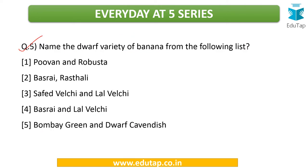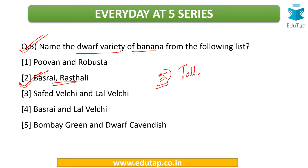The last question for discussion: name the dwarf variety of banana from the following list — which options contain both dwarf varieties. The answer is Basrai and Rastali; these are the correct answers. Now the next question, the fifth one, is to name the tall varieties of banana. Here you can see the dwarf varieties, so mention at least one of the tall varieties and we will discuss that in the next section.